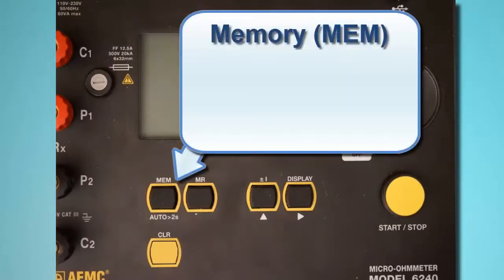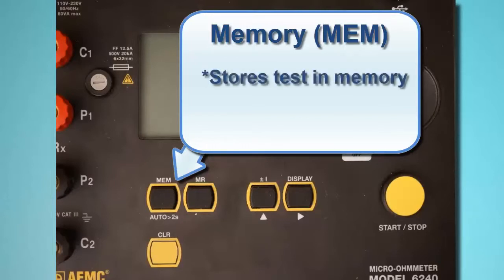The memory button, labeled MEM, stores the test in the instrument's memory where it can be subsequently viewed on the LCD and downloaded to a computer running DataView. This button also initiates AUTO mode, which we explain later in this video.